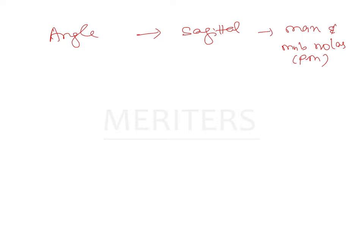Angle's classification did not consider the other planes of space like transverse and vertical, nor did it take into consideration the soft tissue components or the skeletal components. So in order to overcome these limitations, in the 1960s, Ackermann and Proffitt came up with their own system of classification.